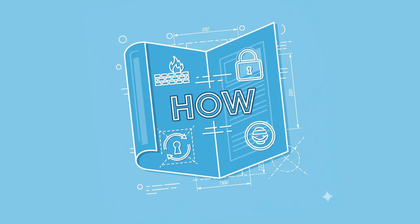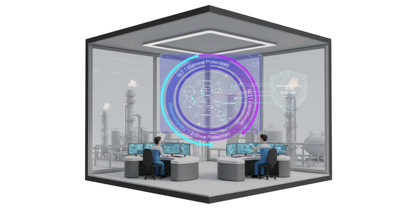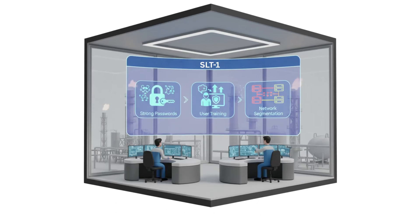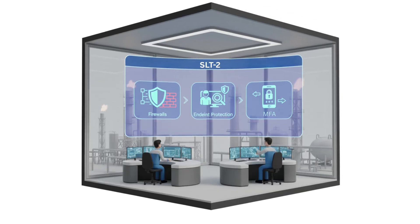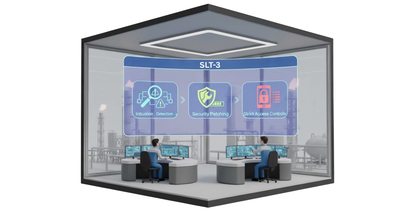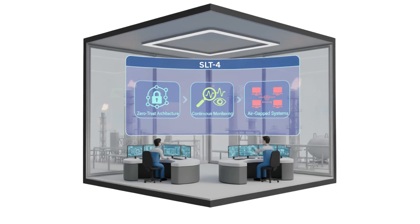Achieving SLT levels requires implementing specific security controls. SLT 1 calls for basic cybersecurity hygiene: strong passwords, user training, and network segmentation. SLT 2 adds firewalls, endpoint protection, and multi-factor authentication (MFA). SLT 3 requires implementing intrusion detection, security patching, and strict access controls. SLT 4 calls for zero-trust architecture, continuous monitoring, and air-gapped critical systems.